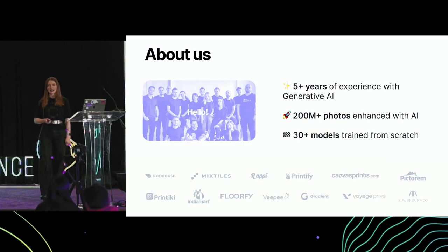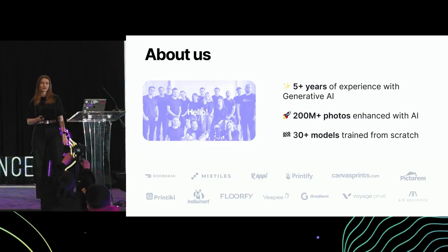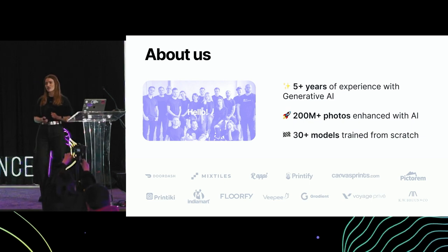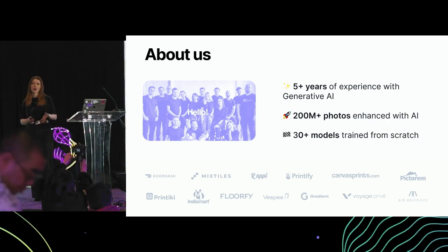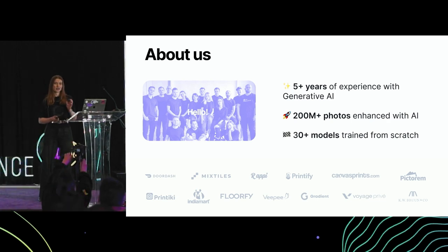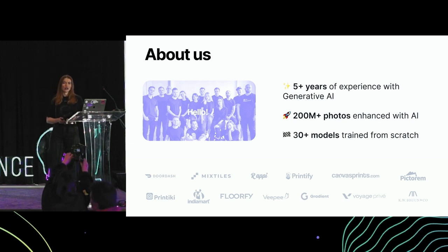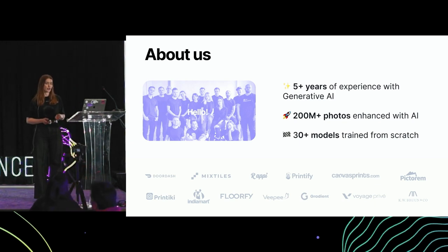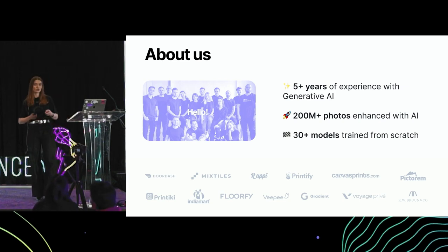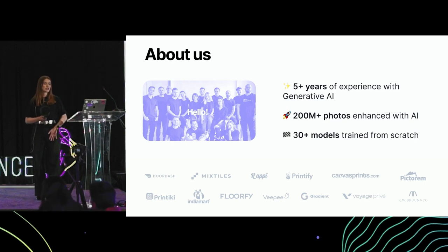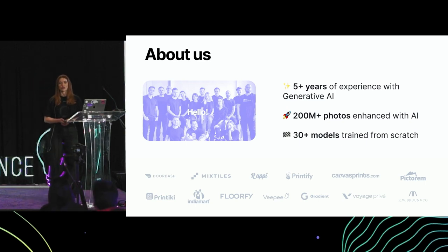A little bit about Let's Enhance: we've been working with generative AI for the last almost six years. We started our first tool back in 2018 when we launched the first application that can improve photo quality. Since then, we've processed more than 200 million images with AI, learned a lot about what works and what doesn't, and we have a research team that trains models from scratch and uses them in live workflows. We work with all kinds of big and small customers, and definitely with a lot of smaller brands and individual creatives as well.